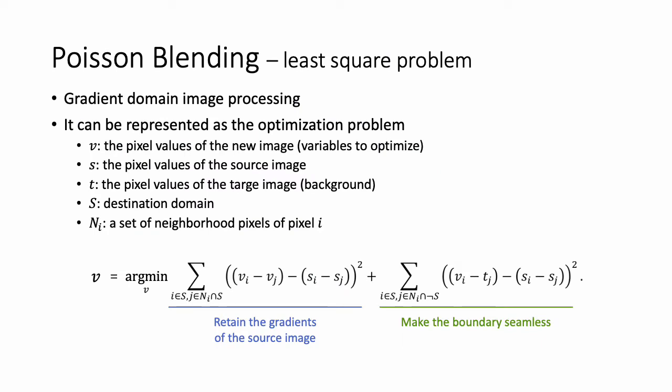The key idea is to solve the optimization problem to match the intensities and the gradients to the desired values. The Poisson blending technique is a gradient domain image processing. It can be represented as the optimization problem, actually the least-square problem. These are the notation and the objective function. The objective mainly consists of two terms: the first term encourages the new image to retain the gradients of the source image, and the second term makes the boundary more seamless.